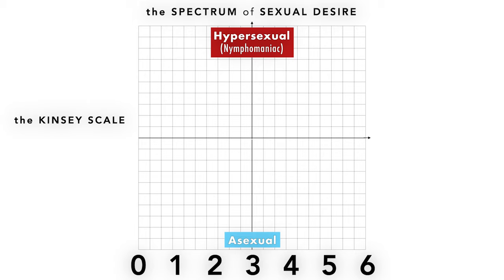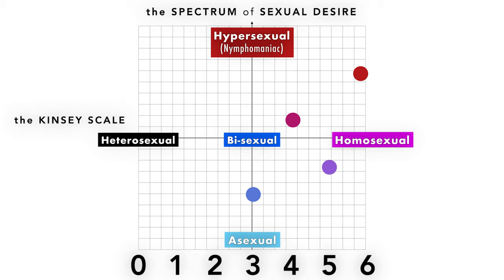There are people who are a three, four, five, or six on the Kinsey Scale who are above or below average in sexual desire. And there are people who are three, two, one, or zero on the Kinsey Scale with above or below average levels of sexual desire.